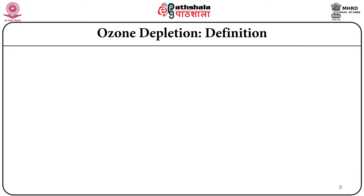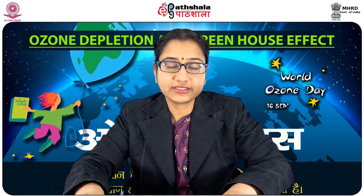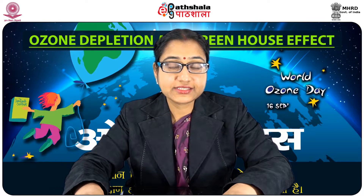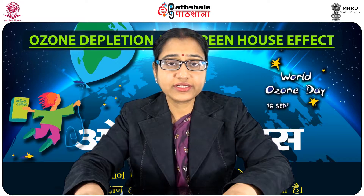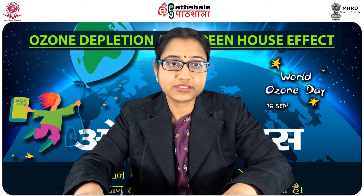What is ozone depletion? Ozone depletion is the gradual thinning of the earth's ozone layer in the upper atmosphere, caused by the release of chemical compounds from industry and other human activities that contain gaseous chlorine and bromine. One example of ozone depletion is the annual ozone hole over Antarctica that has occurred during the Antarctic spring — September to November — since the early 1980s. This is not really a hole but rather a large area of the stratosphere with extremely low amounts of ozone, that is 220 Dobson units or lower.